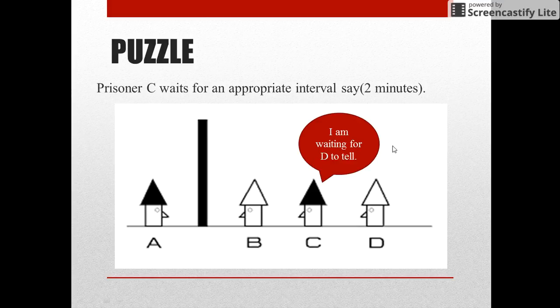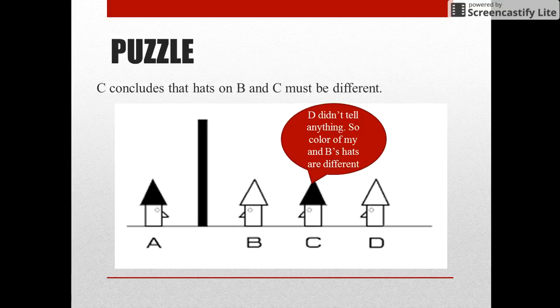So prisoner C waits for some time. When he sees that D is not responding, then prisoner C can deduce that the color of the hats on B and C are different.